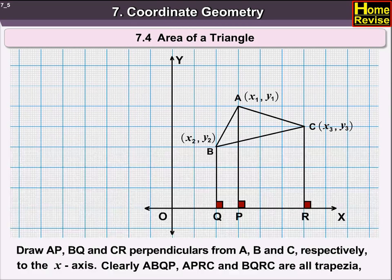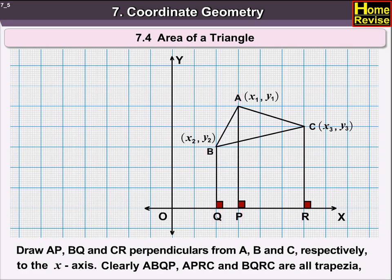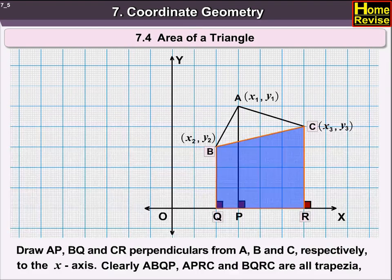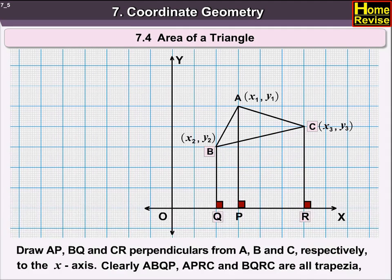Clearly, ABQP, APRC, and BQRC are all trapezoids.